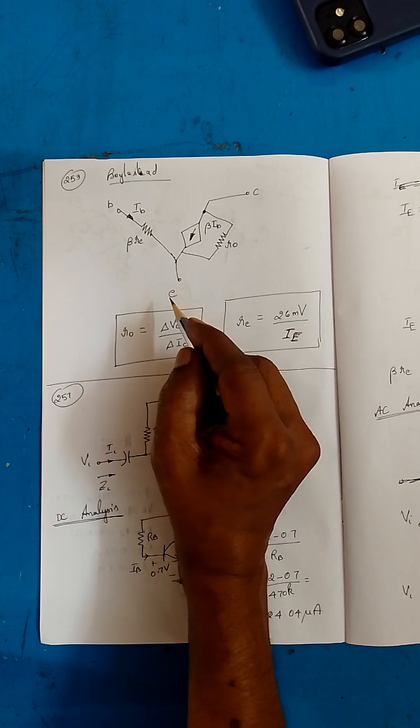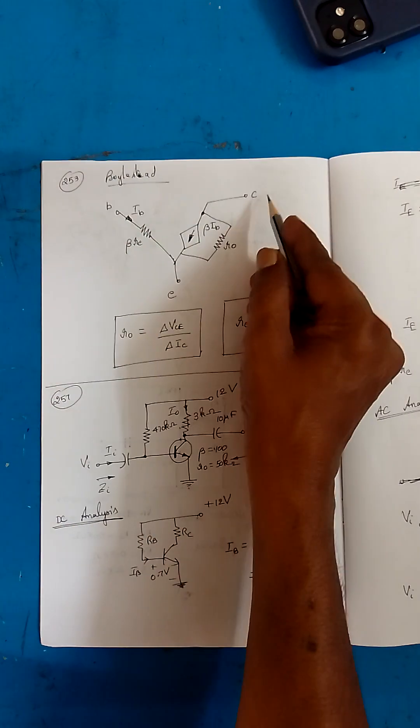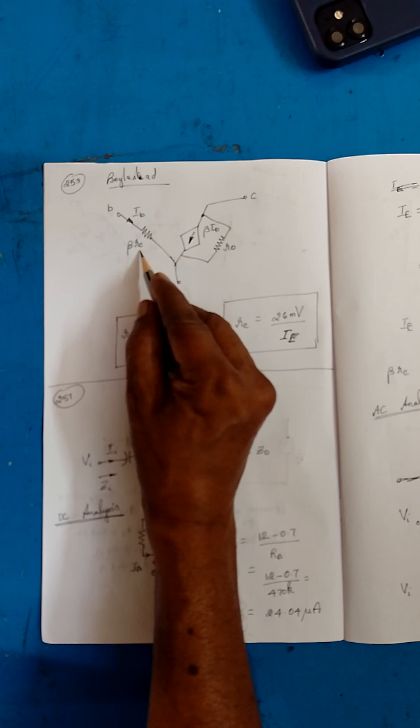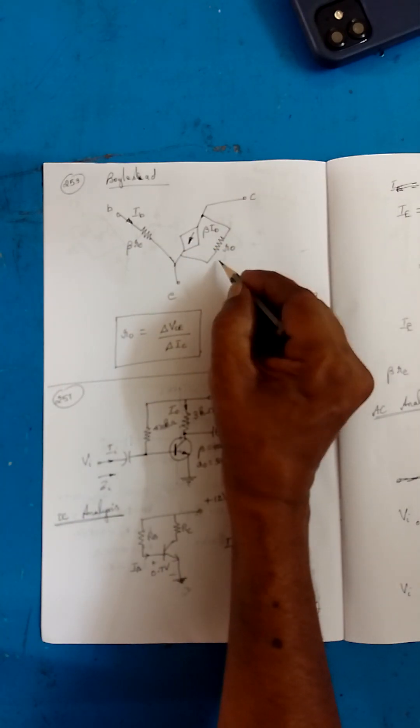This is a transistor equivalent circuit called the beta re model. It has base, collector, and emitter terminals. Here we have beta re, the base current, and a dependent current source beta IB.